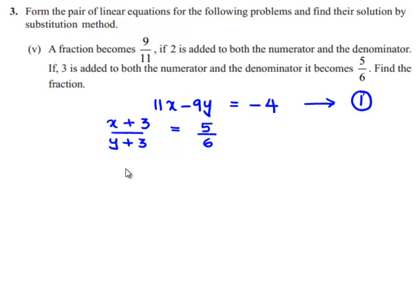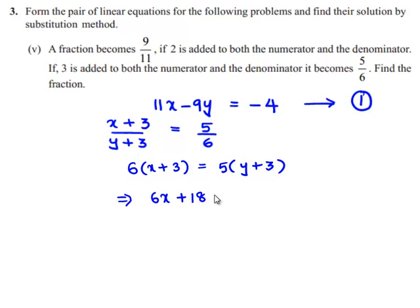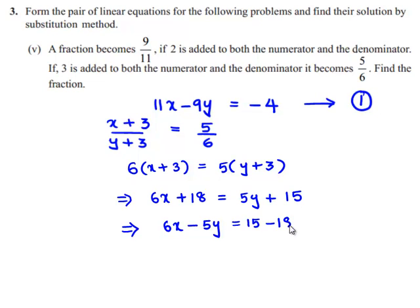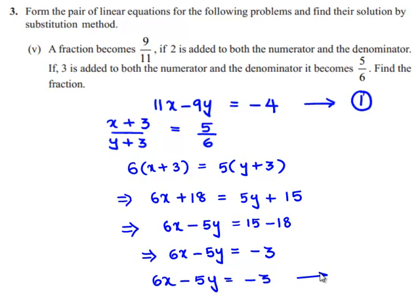On cross multiplication, we get 6 times of (x plus 3) is equal to 5 times of (y plus 3). This implies 6x plus 18 is equal to 5y plus 15. Transposing 5y to the left hand side, we get 6x minus 5y is equal to 15 minus 18, which is minus 3. So the second equation is 6x minus 5y is equal to minus 3.